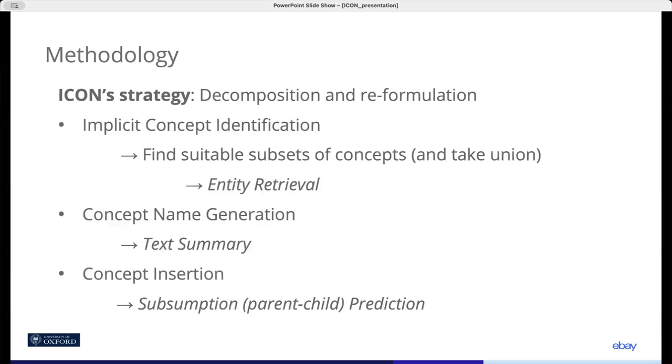Another insight of ICON is to reduce each subtask to a more well-studied research problem. Most importantly, we model the semantics of each implicit concept as a combination of existing concepts, making the identification subtask equivalent to finding a suitable subset of the nodes in the taxonomy. This can be achieved by techniques in entity retrieval.